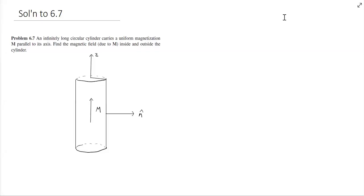Hello everybody. Today I will be solving problem 6.7 from Griffith's E&M book, fourth edition. For this problem we're looking at an infinitely long circular cylinder carrying a uniform magnetization M parallel to its axes. We're going to find the magnetic field due to M inside and outside the cylinder.